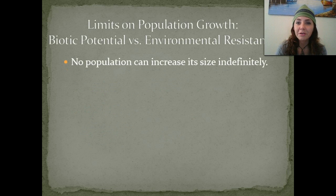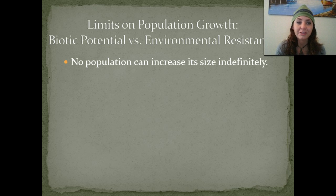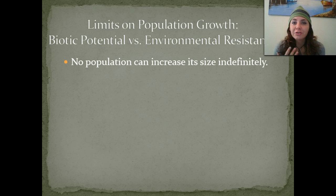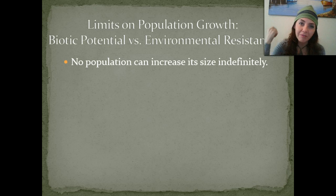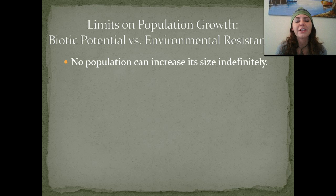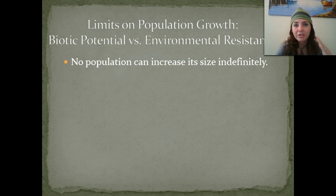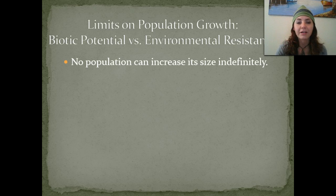Now, limits on population growth: biotic potential versus environmental resistance. Biotic potential is basically how much potential we have as a living organism to reproduce and produce viable offspring. Environmental resistance refers to those limiting factors that the environment throws at us. No population can actually increase its size indefinitely — you're never going to see a population just continue to grow with zero limiting factors.